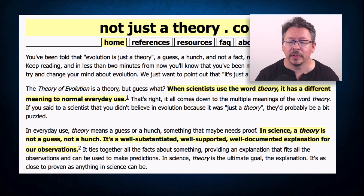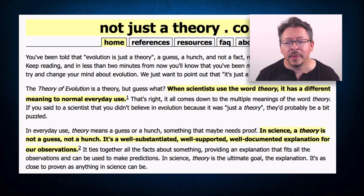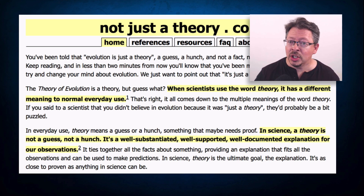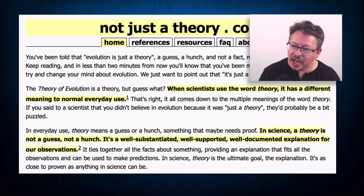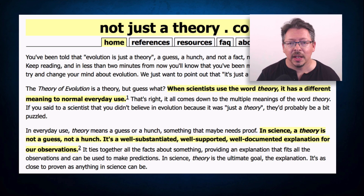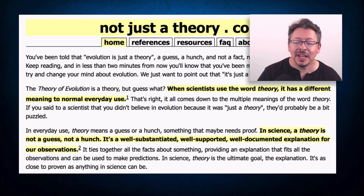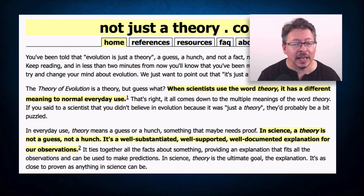Jump to the third paragraph. 'In everyday use, theory means a guess or a hunch, something that maybe needs proof. In science, a theory is not a guess, not a hunch. It's a well-substantiated, well-supported, well-documented explanation for our observations. It ties together all the facts about something, providing an explanation that fits all the observations and can be used to make predictions. In science, theory is the ultimate goal. It's as close to proven as anything in science can be.'